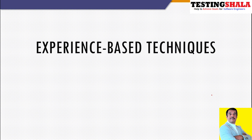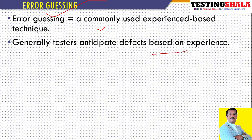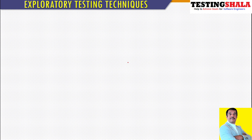The next black-box design technique is the experience-based technique. One example is error guessing. Based on our past experience, we try to guess what kind of errors we may get. We input various different values and anticipate: if I give this kind of test data, I may get this kind of output. This is another kind of testing — it is more of an error guessing technique.